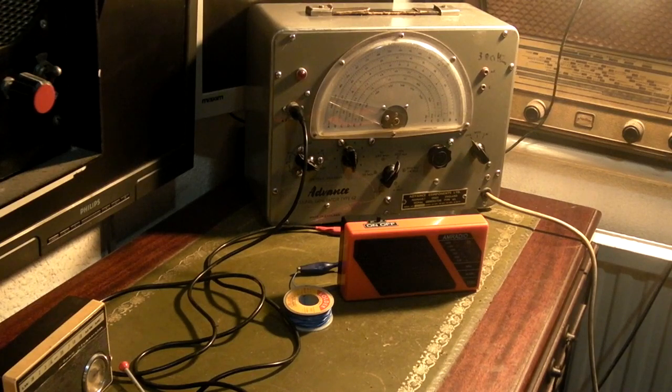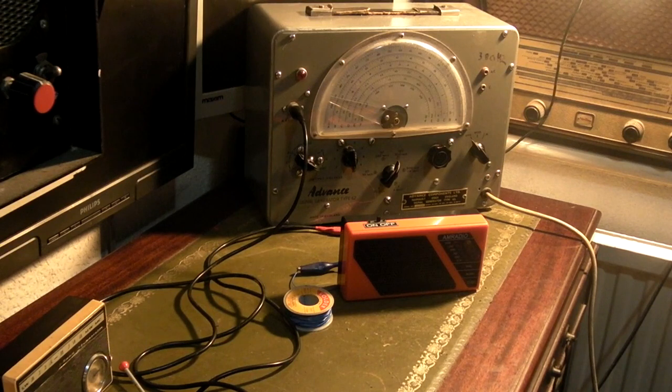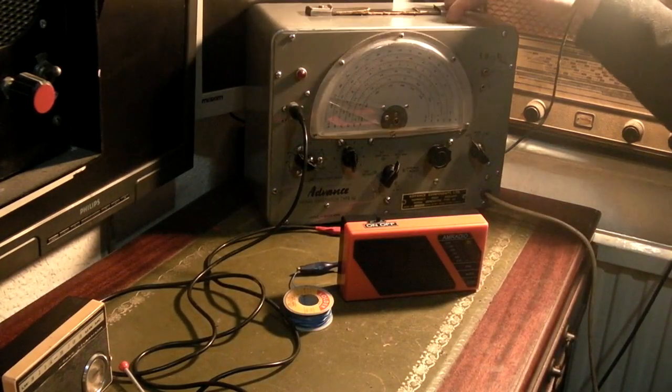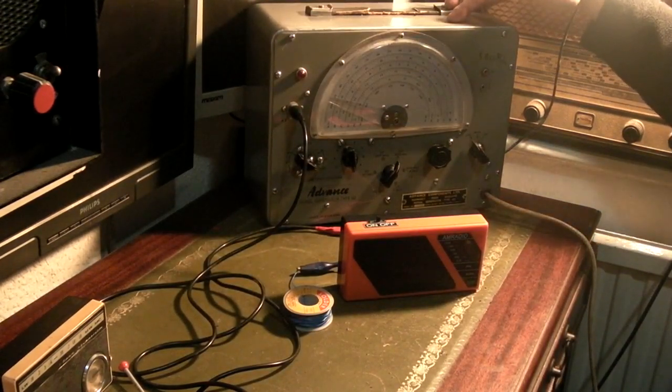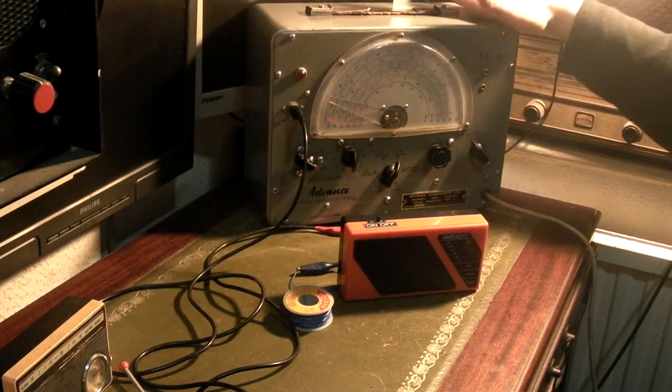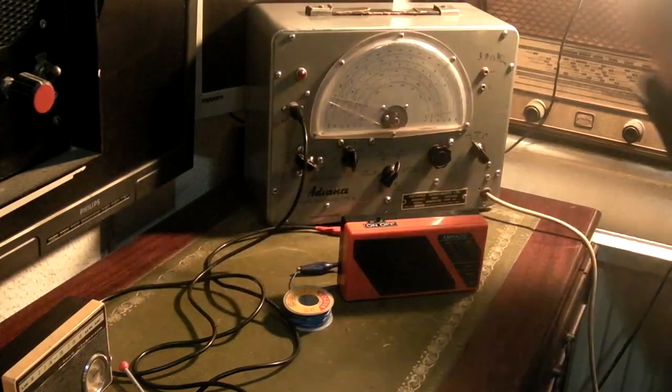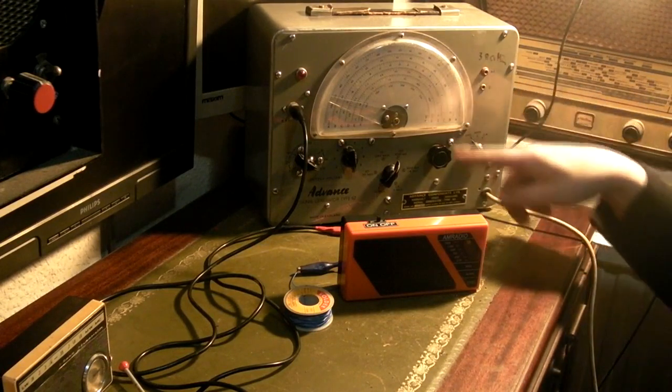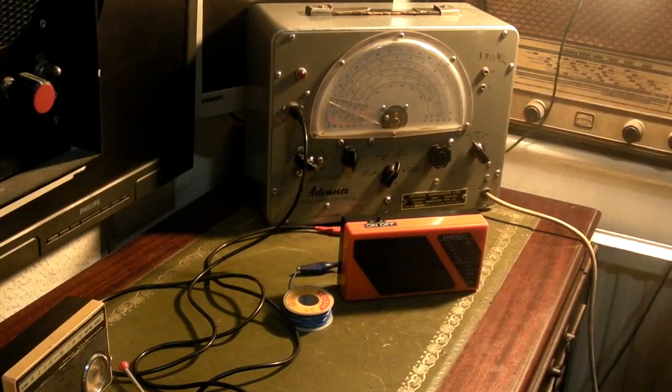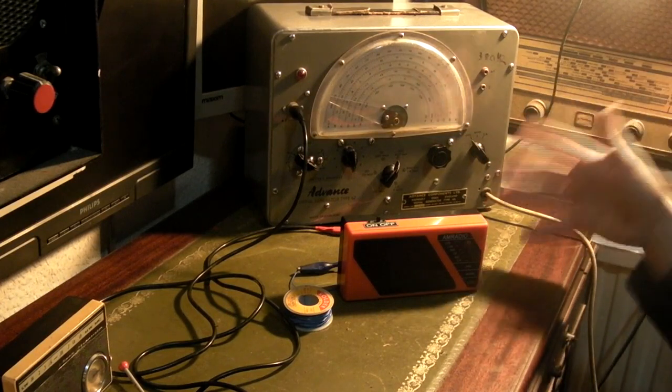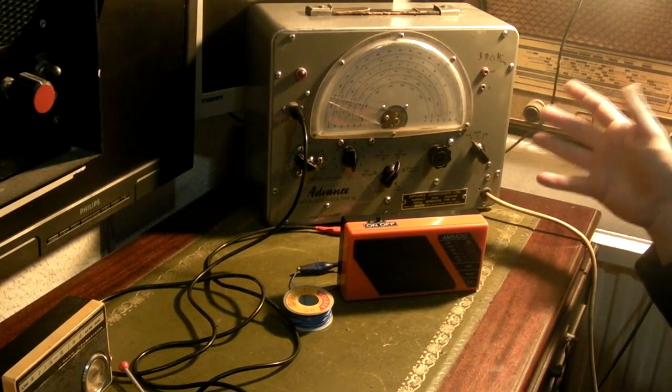But he could only get it to pick up a couple of stations with a lot of howling and motorboating, and the thing is he didn't have any alignment equipment. And that's what this is behind it there - what we've got here is an Advanced Type 62 frequency generator, and what this can do is output various frequencies. This allows you to set the intermediate frequency on the radio correctly and basically align the radio.